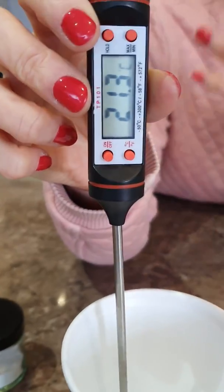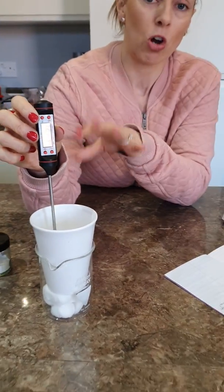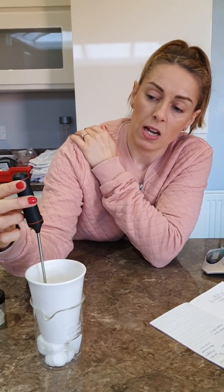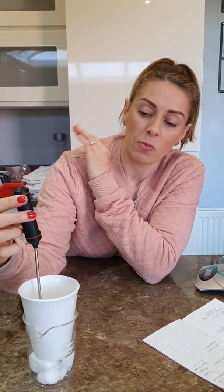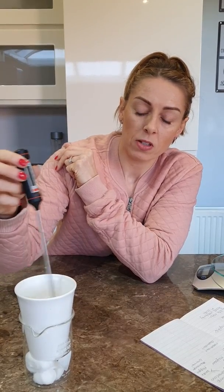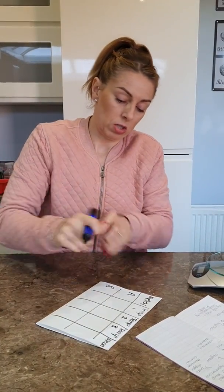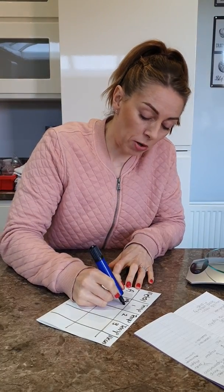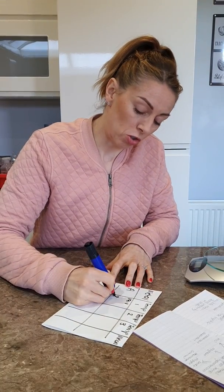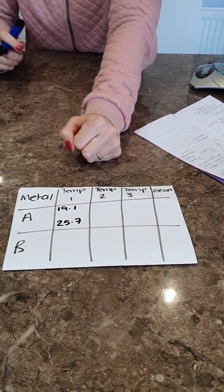We're looking for the highest temperature change on the thermometer, so I wait until the temperature stops rising. I'll record in my table that the temperature started at 19.1 degrees and rose to 25.7 degrees.